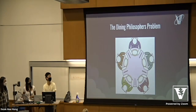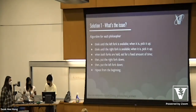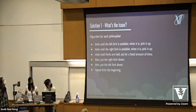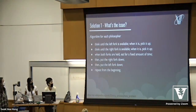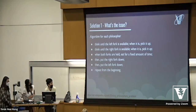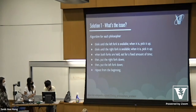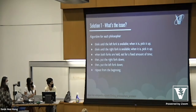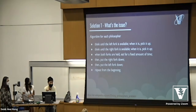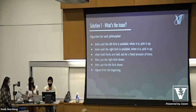One solution to get you guys started: what if we say for each philosopher, he's going to think until the fork on his left is available, and then when it is, he's going to pick it up. And then when the fork on his right is available, he'll pick it up too. And when he has both forks, he'll eat for a fixed amount of time. When he's done eating, he'll put his right fork down, put his left fork down, and then keep thinking or wait to eat again.